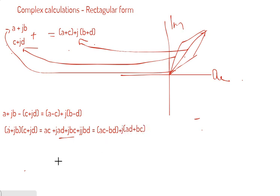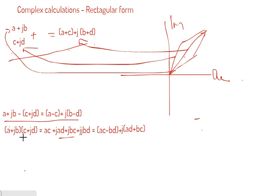This is how you multiply two numbers in rectangular form. For addition and subtraction, the parallelogram rule applies. For multiplication of (a plus j b) into (c plus j d), the real and imaginary parts get separated, and j squared equals minus one. With that, I am ending this short video on complex calculations in rectangular form. Thank you.